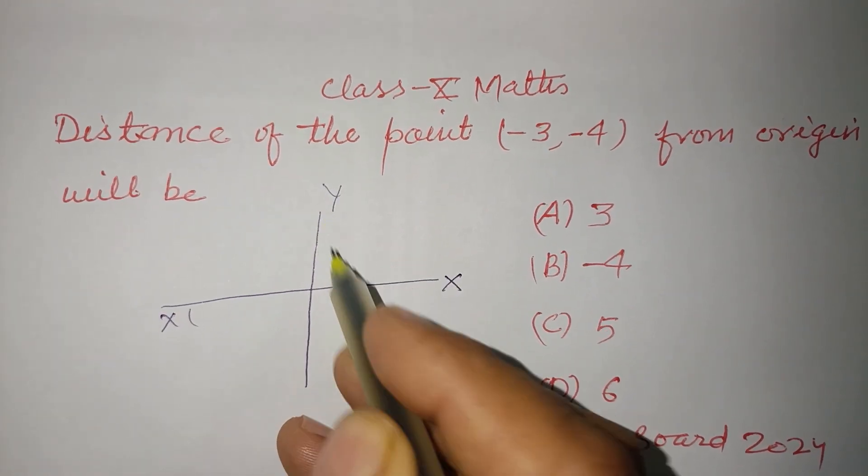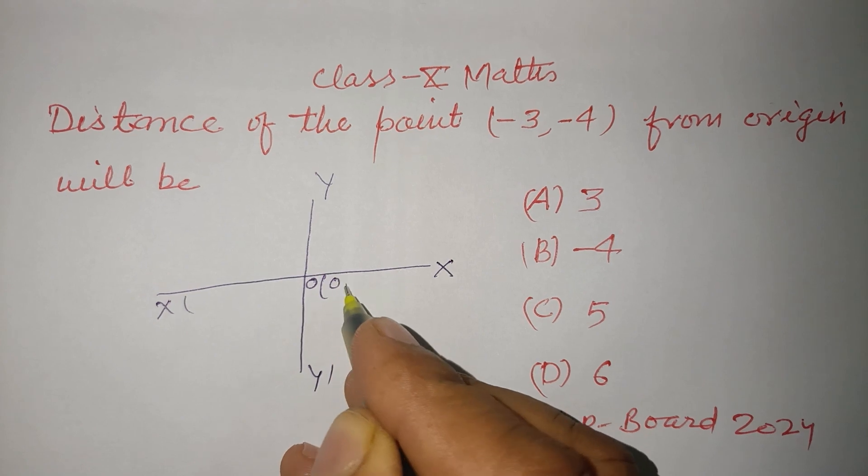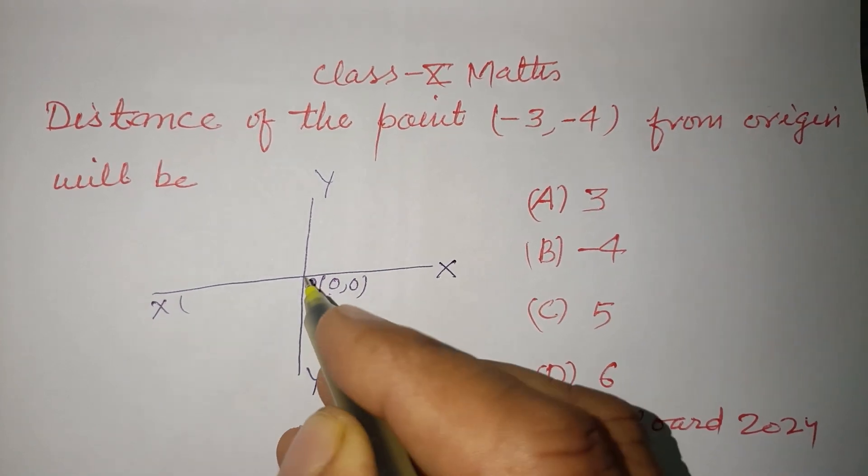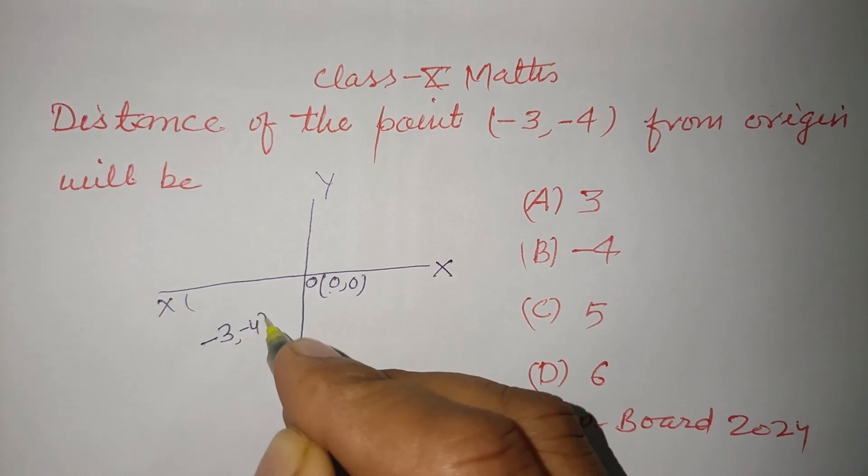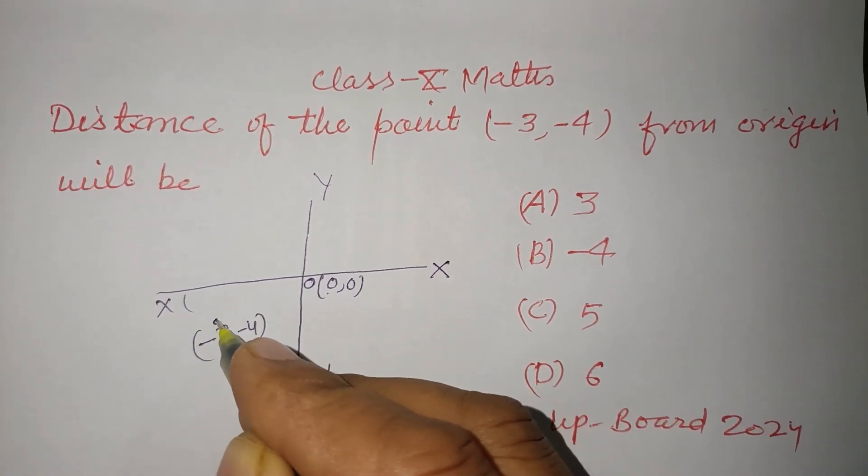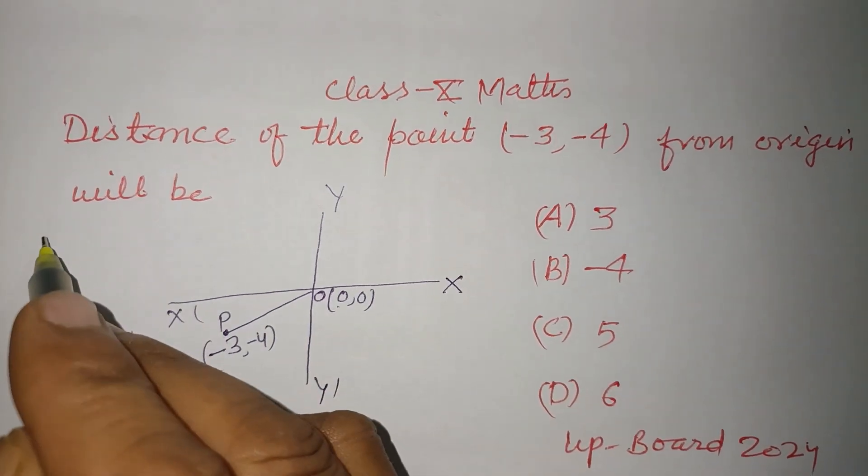And it is origin point which has a coordinate (0, 0) and the given point is (-3, -4) which lies in the third quadrant. Let it be P, so here we require OP.